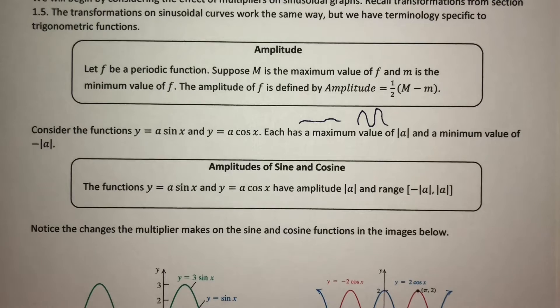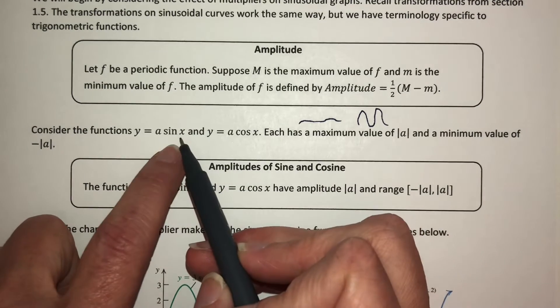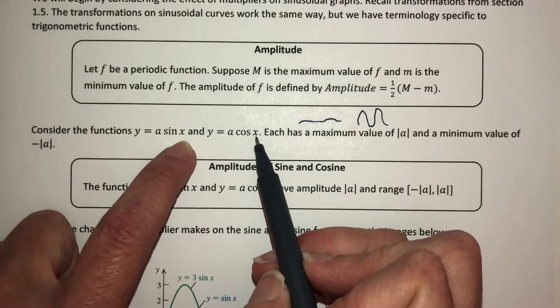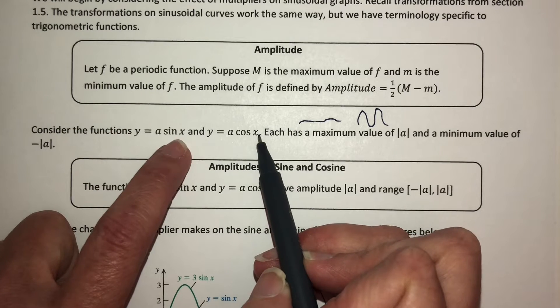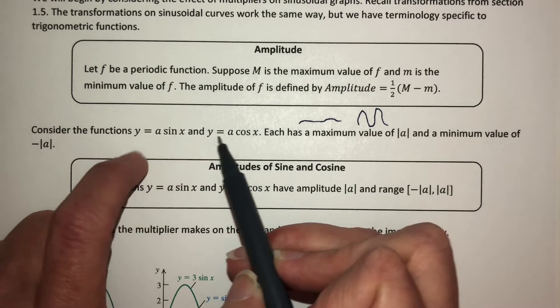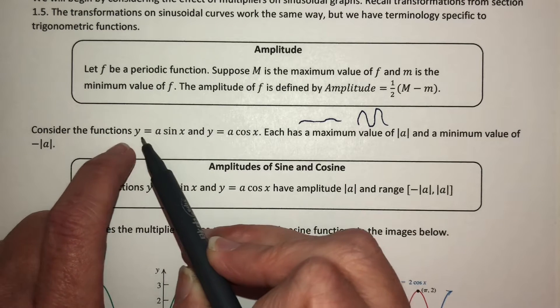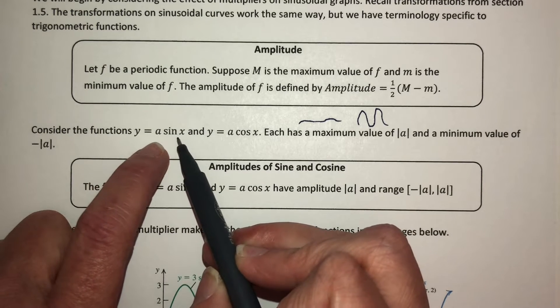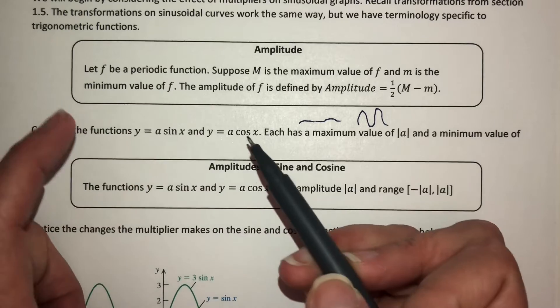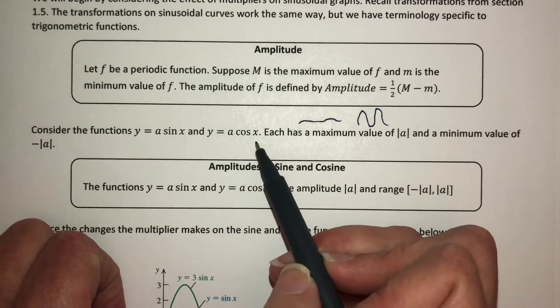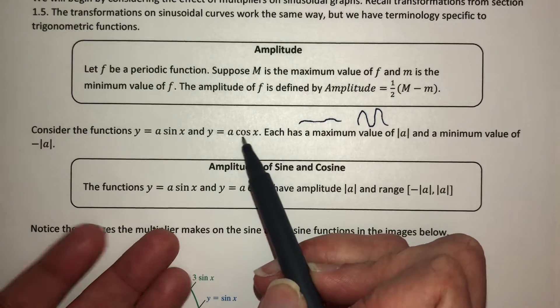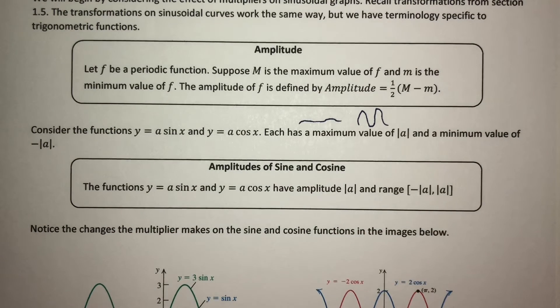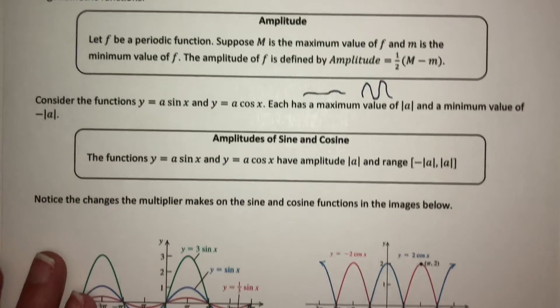We know that sine of x and cosine of x, the largest value that this can possibly be is 1. So the largest value we can get out of y = a sin x is a times 1, or a. Same thing here. Minimum value: these are negative 1 for just the sine and cosine. So the minimum value, if we're multiplying it by a, is negative a.